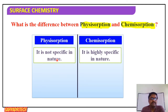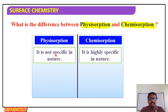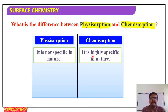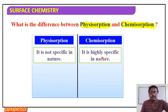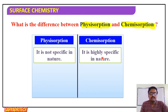Second difference: physical adsorption is not specific in nature — it takes place between any kind of adsorbate and any kind of adsorbent. On the other hand, chemical adsorption is highly specific in nature, meaning it takes place only with particular types of adsorbate and adsorbent.